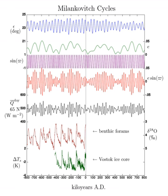Some models can reproduce the 100,000-year cycles as a result of nonlinear interactions between small changes in the Earth's orbit and internal oscillations of the climate system.